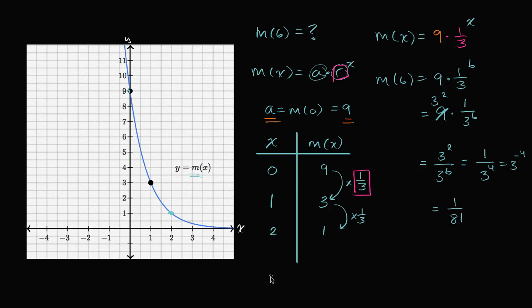We could also have done that if we kept going by our table. M of three multiplied by one third is going to be one third. M of four multiplied by one third again is going to be one ninth. M of five is going to be one twenty-seventh, and M of six is going to be one eighty-first.